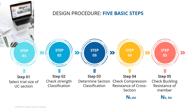Here are the 5 basic steps in the design procedure for a steel column. First, select a trial size of UC section. Step 2, check strength classification, followed by determining section classification. Step 4, check compression resistance of cross-section, NcRd. And finally, Step 5, check buckling resistance of member, NbRd.